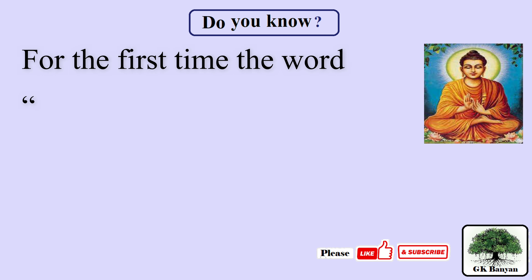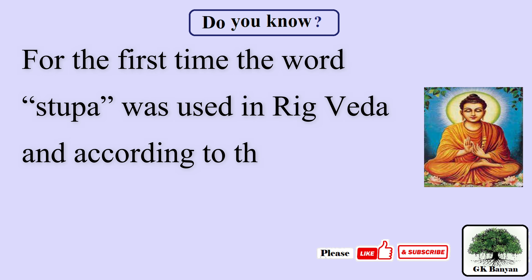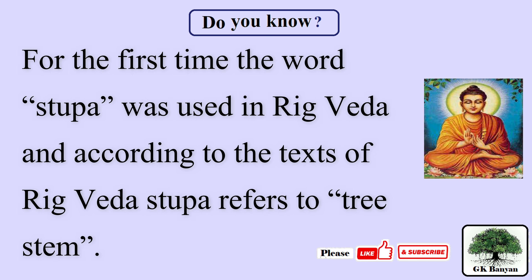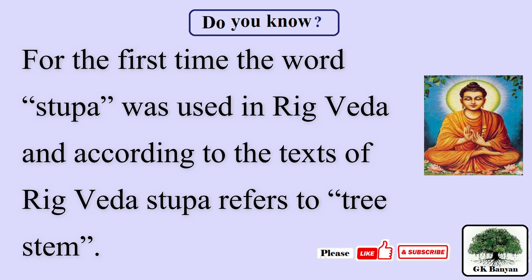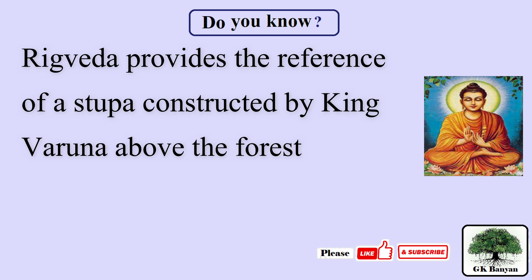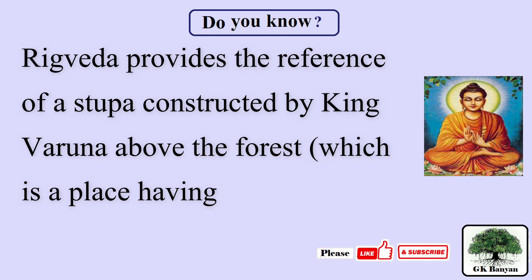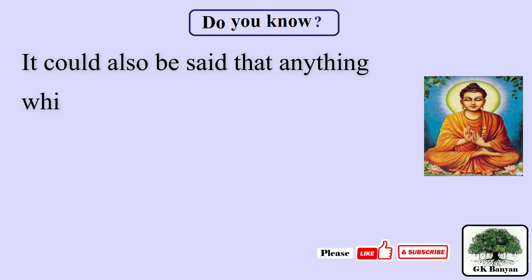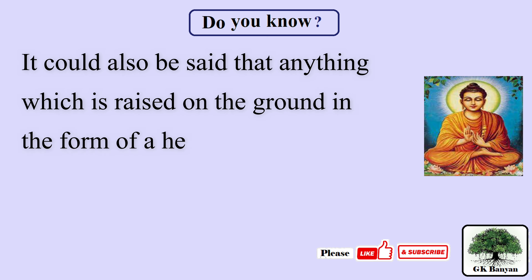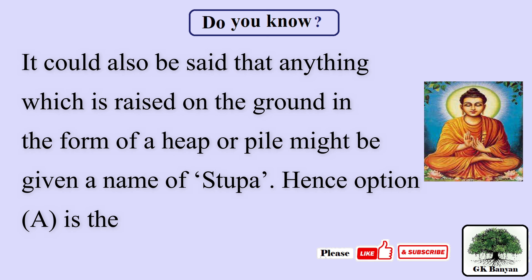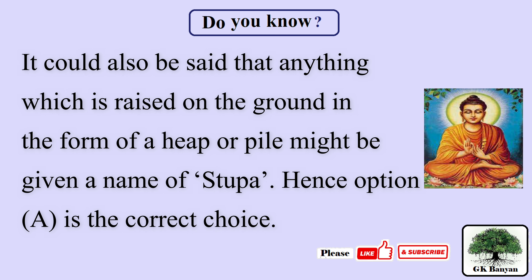For the first time, the word Stupa was used in Rig Veda. According to the texts of Rig Veda, Stupa refers to a tree stem. Rig Veda provides the reference of a Stupa constructed by King Varun above the forest, which is a place having no proper foundation. It could also be said that anything which is raised on the ground in the form of a heap or pile might be given the name of Stupa.